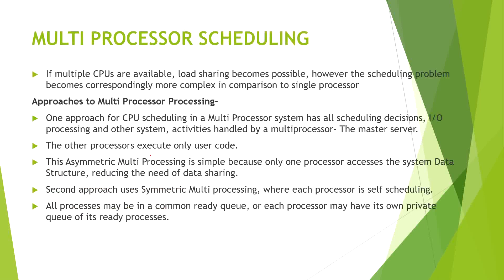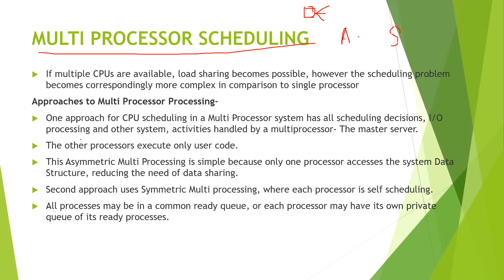Now we will discuss about multi-processor scheduling. Under multi-processor scheduling there are two types: asymmetric and symmetric. In asymmetric, there is a master-slave type of processing design — one is the master processor which gives commands to other processors or slave servers to execute different types of commands. The other processors execute only user code.